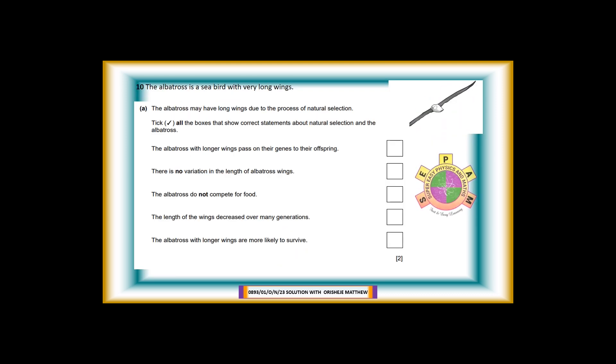Question 10. The albatross is a sea bird with very long wings. 10a: The albatross may have long wings due to the process of natural selection. Tick all the boxes that show correct statements about natural selection and the albatross. The albatross with longer wings pass on their genes to their offspring. There is no variation in the length of albatross wings. The albatross do not compete for food. The length of the wings decreased over many generations. The albatross with longer wings are more likely to survive. For 2 marks. Answer: Tick - The albatross with longer wings pass on their genes to their offspring. And also tick - The albatross with longer wings are more likely to survive.